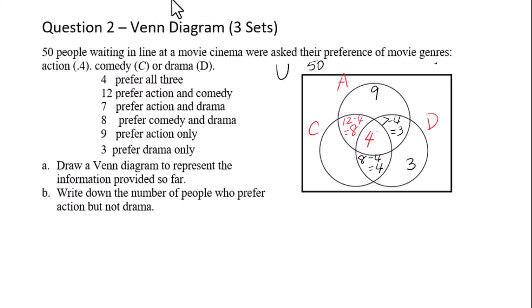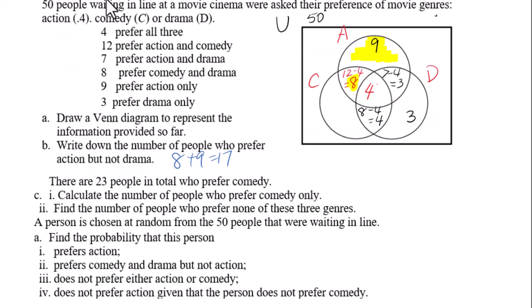For part b, write down the number of people who prefer action but not drama. Action but not drama includes the action-only region and the action-and-comedy region — these two sections. So we have 8 plus 9 equals 17.